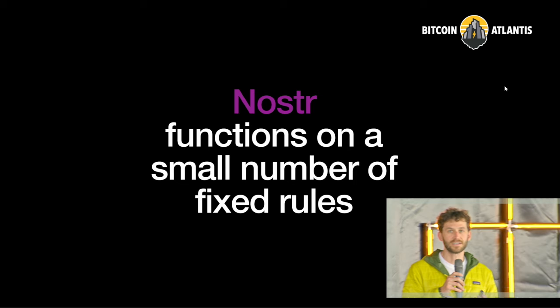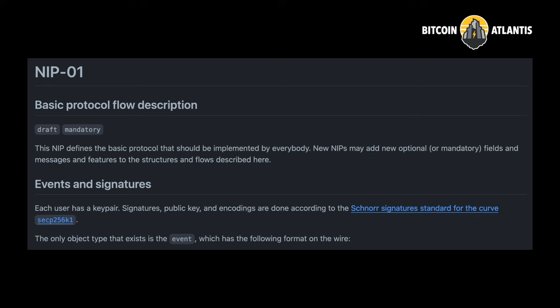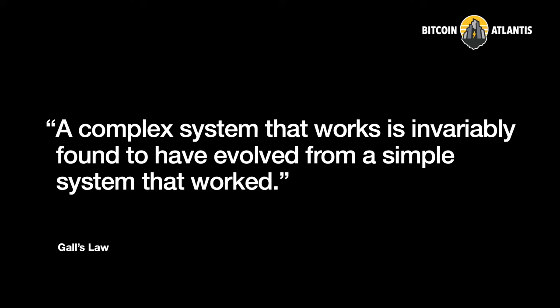Nostr as well functions on a very, very small set of fixed rules. In fact, the only required NIP is NIP number one, and that's the one that describes the structure of the data and how to talk to a relay. That's literally it — everything else is optional. We're so early in the days of what Nostr might become. But I think by sticking to something extremely simple, extremely easy for people to experiment and play with, we are giving it a really great chance to develop into something incredible, really diverse, and probably way more complicated and complex than we would otherwise think it might be able to do now.